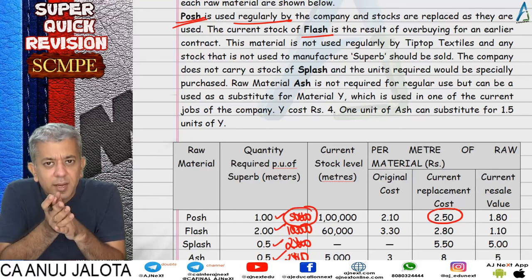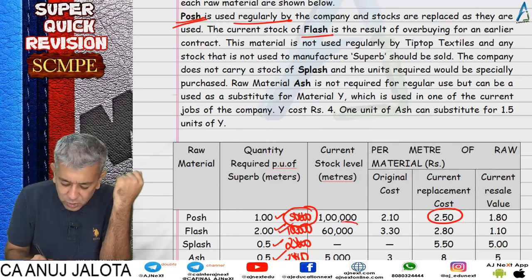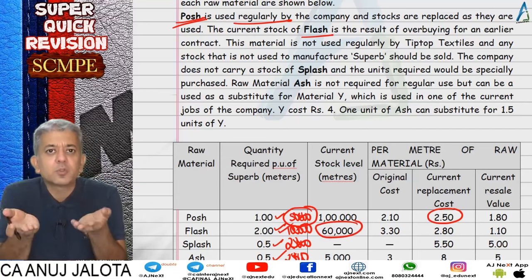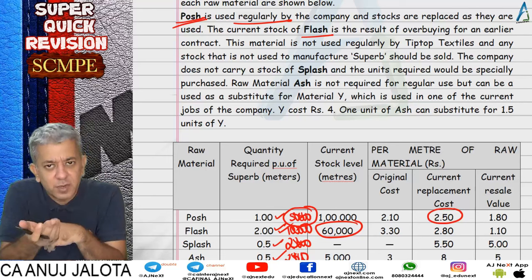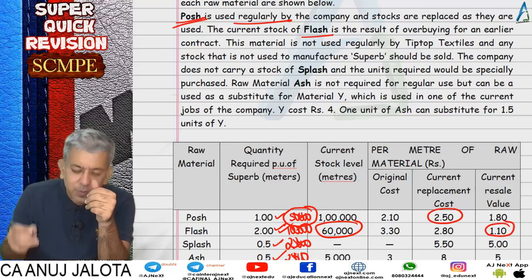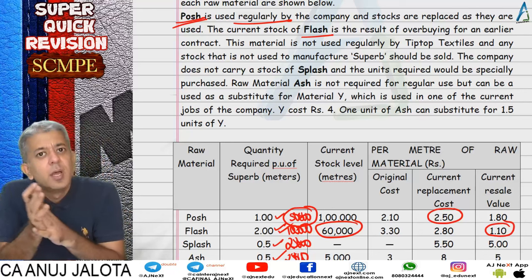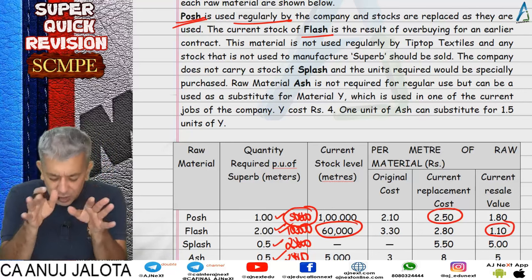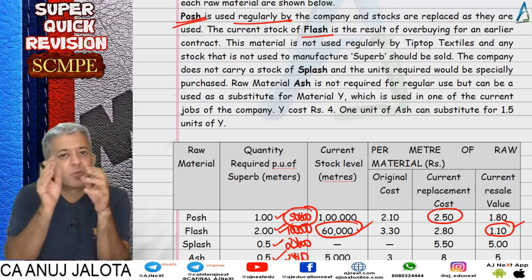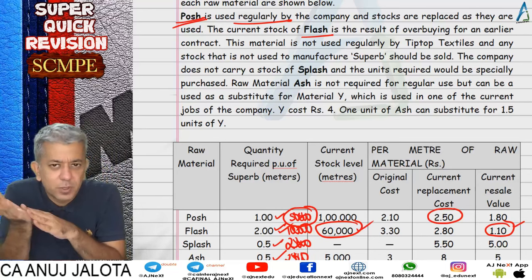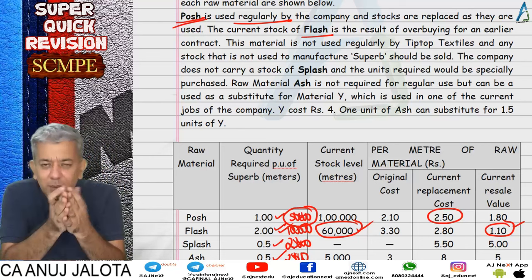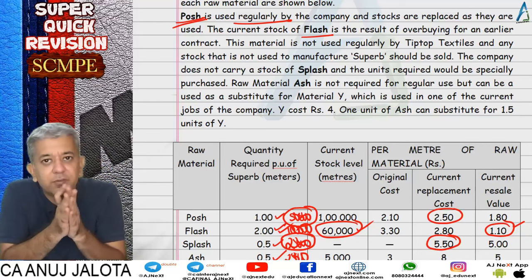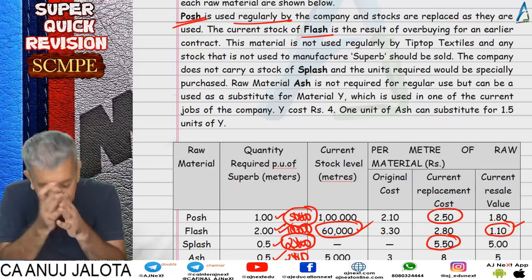For the extra stock: 1,000 units at 0.5 meters each. We had 60,000 units in stock. If the offer comes, we will not buy at the rate of 1.1 - use it rather than lose it. The other 40,000 you will buy at current replacement cost. So Flash cost = 60,000 × 1.1 plus 40,000 × current replacement cost. Third material: 25,000 units - buy at market rate of 5.5.